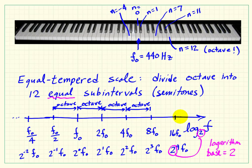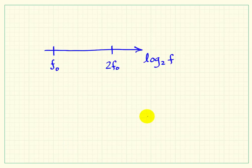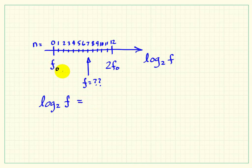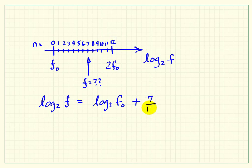Every given jump along our log frequency axis always corresponds to one octave. Now let's consider a single octave divided into 12 equal subintervals. N equals 0 puts us at our reference frequency, and N equals 12 puts us one octave above. We want to calculate the frequency of something in between those two octave endpoints. Since we're dealing with log frequency, we can write that log base 2 of the in-between frequency equals log base 2 of the reference, plus the fractional chunk of the octave — in this case 7/12. That becomes a constant offset, which we can generalize by replacing 7 with N.